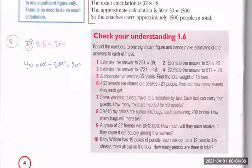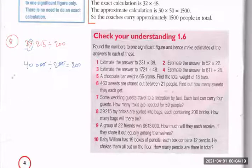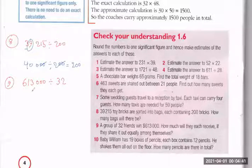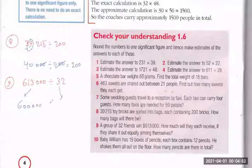A group of 32 friends win 613,000 dollars. How much will they each receive if they share it equally? We divide 613,000 by 32. Rounding to one significant figure: 613,000 becomes 600,000, and 32 becomes 30. Cancel two zeros: 6 divide by 3 is 2, with four zeros remaining — so approximately 20,000 dollars each.